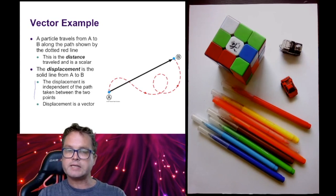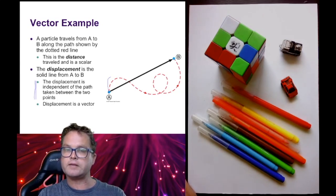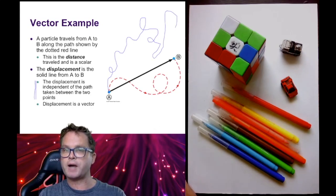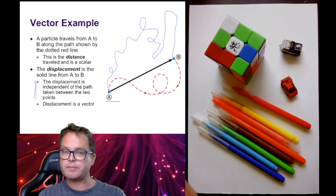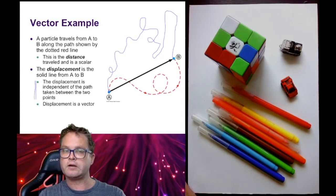The displacement is independent of the path taken between the two points. Consider a second bug that takes a longer, looping path but also ends up exactly at point B. The distance the second bug walks is much further, but if we look at the displacement, we're interested only in the start and the final position. The displacement vector points in the same direction for both bugs — so the displacement is independent of the path taken.